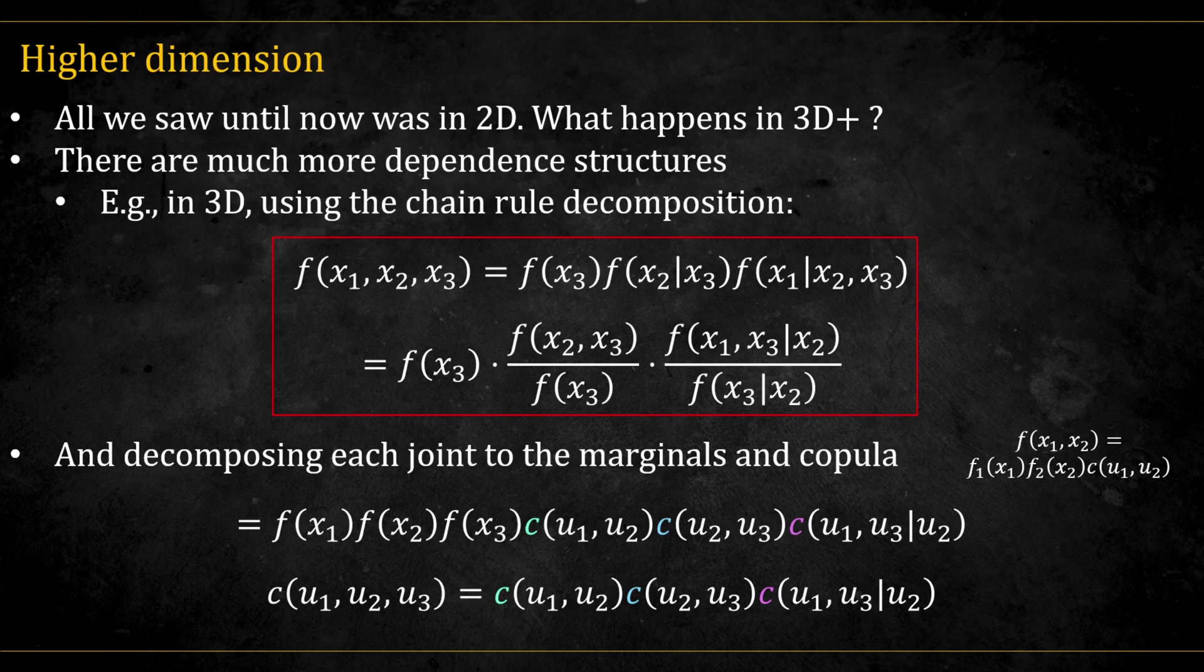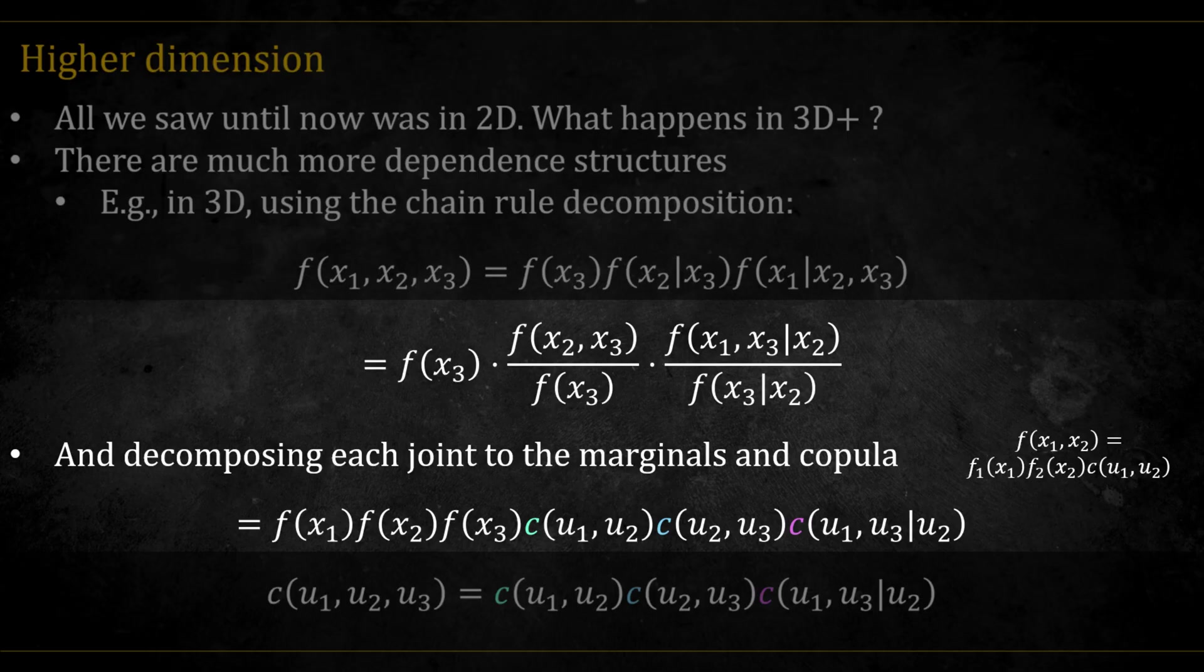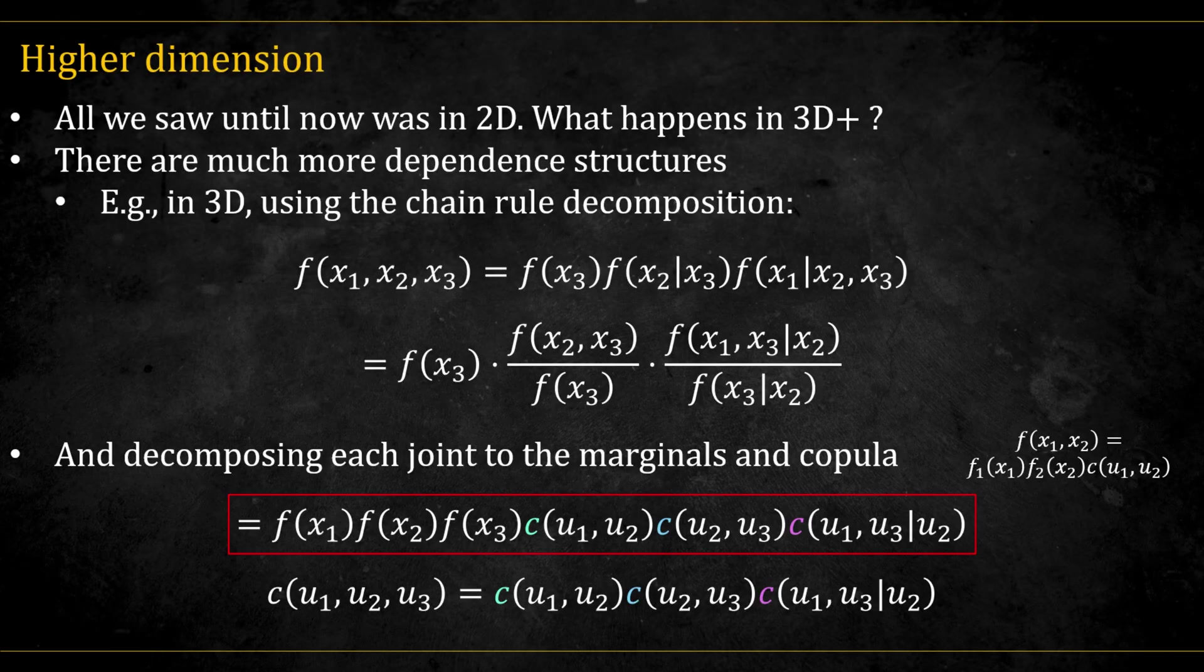Let's examine the 3D case. Using the chain rule, we can decompose the joint probability into conditional components. Then, applying the copula density formula to each joint term, we arrive at an expression like this.